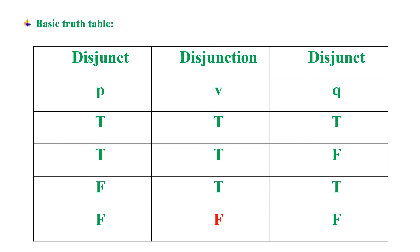In the first case, both disjuncts are true — obviously the disjunction will be true. In the second case, the left disjunct is true — so it will be true. In the third case, the right disjunct is true — so it will be true. It is false only under one condition: when both disjuncts are false. In the next session, we will be studying the fourth and fifth type of truth functional compound statement or proposition.